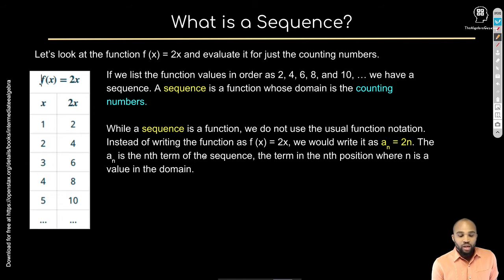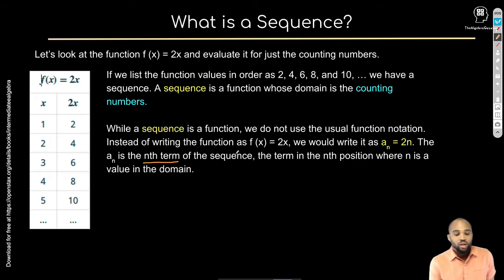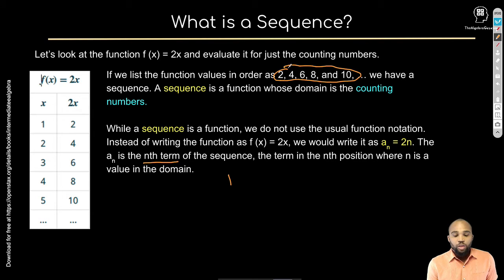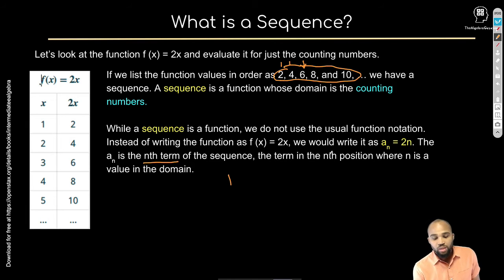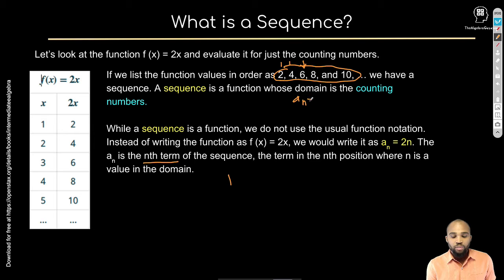The a_sub_n is the nth term of the sequence — it tells us the value at a given position. For example, if we want to know what's in the third position, we count: position one, two, three — that's a 6. So 6 is our a_sub_n, and n equals 3 because it's the third position.